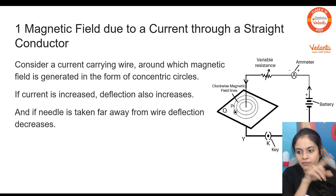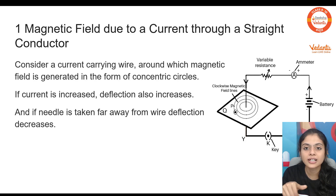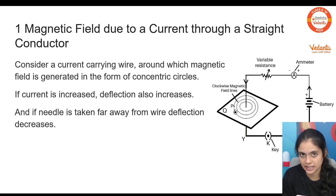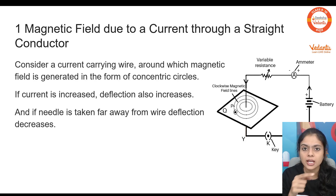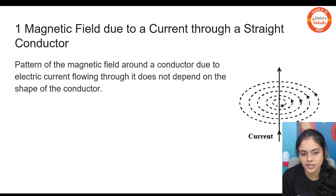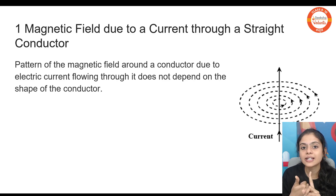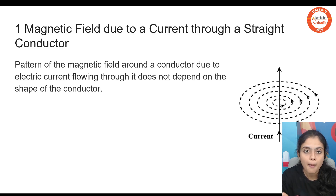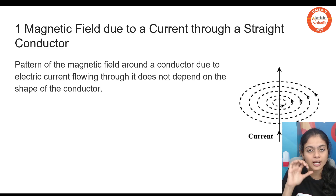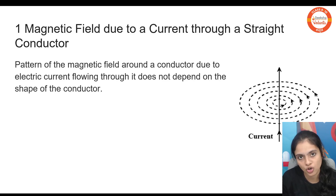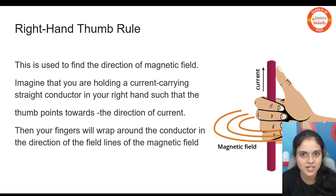Around a current-carrying conductor, the magnetic field is formed as concentric circles. To get the direction of those concentric circles, we use the right-hand thumb rule: the thumb points in the direction of the electric current, and the rest of the fingers depict the direction of the magnetic field. You can use your right hand thumb to determine the direction of the magnetic field.